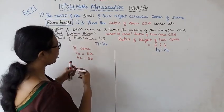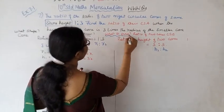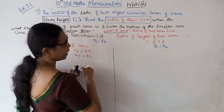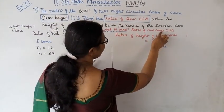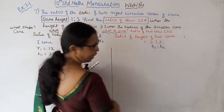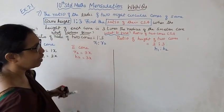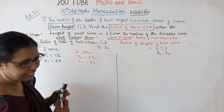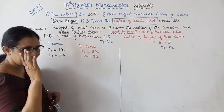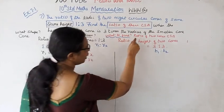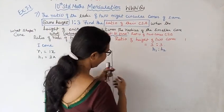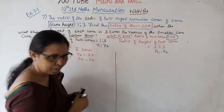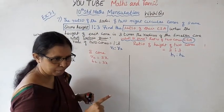What to find? Find the ratio of the CSA of the 2 cones. So we need the ratio of the curved surface area (CSA) of the two cones. What is the CSA formula? We need to identify that.